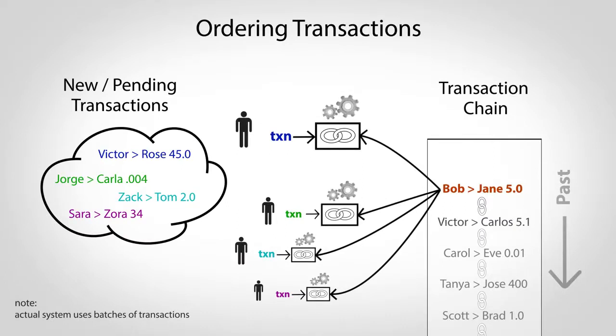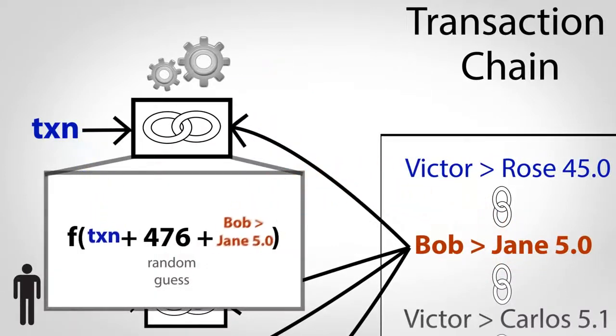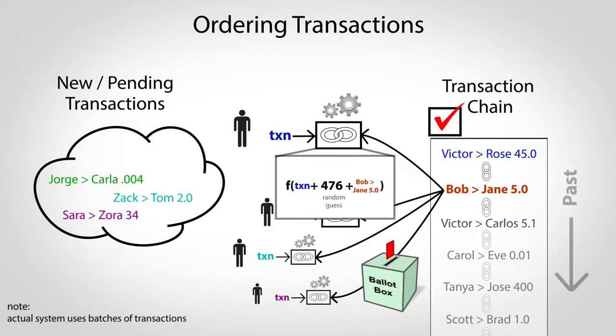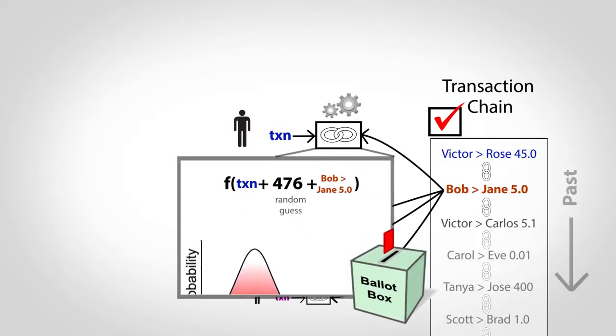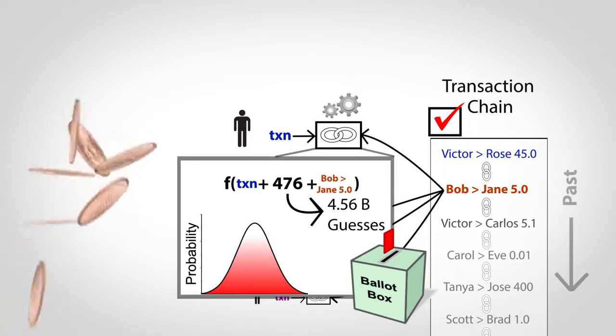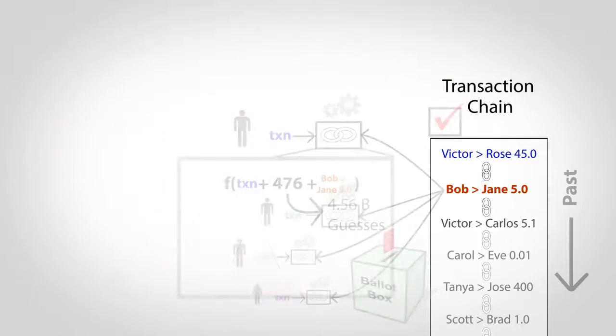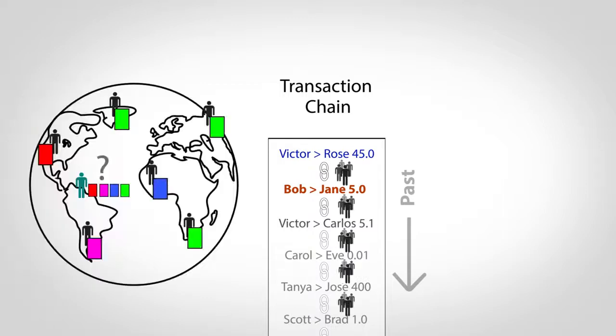The transaction ordering process described before actually provides the voting system. Part of the input to the linking problem is a transaction from the end of a chain, so each guess is effectively a vote for that chain. But how are all the votes tallied? Because the cryptographic hash function has well-defined statistical properties, you can look at any given answer and estimate how many guesses it took to find it, just like estimating how many coin flips it would take to get 100 heads in a row. So the links in a chain not only put transactions in order, but also act as an effective vote tally, making it easy to see which chain most people are using.